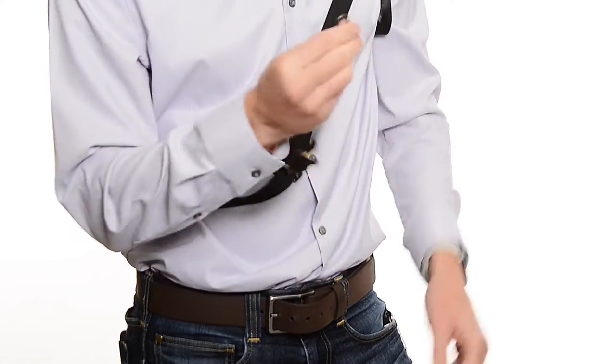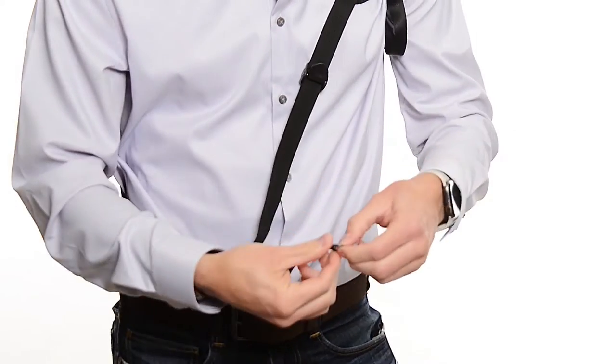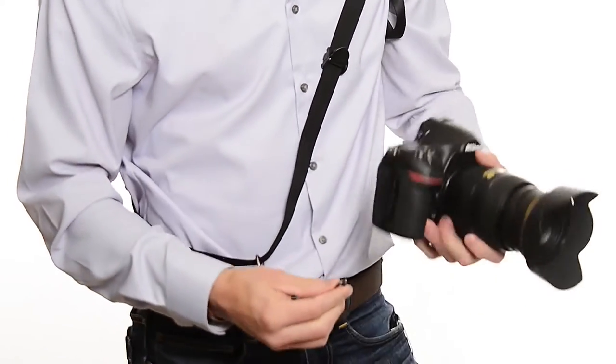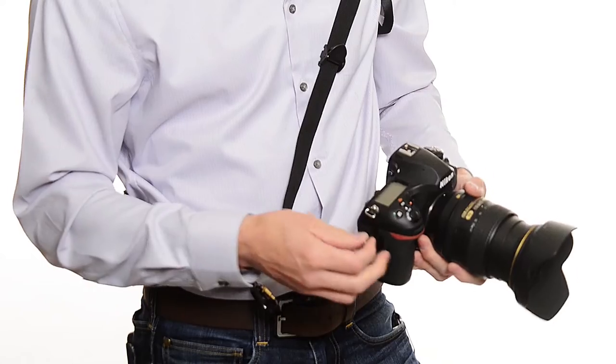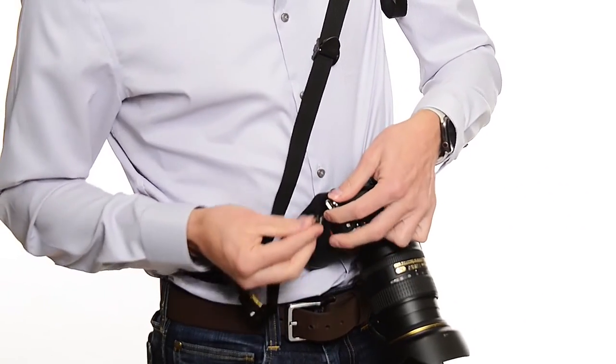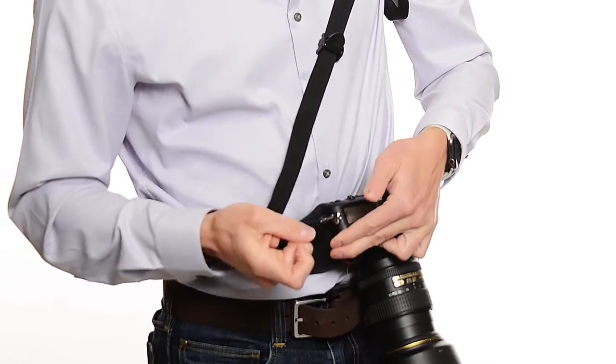I can then attach this safety tether to where my camera strap would normally attach. On this particular camera, it's going to be here on the side, right here where my strap would attach, just like that.